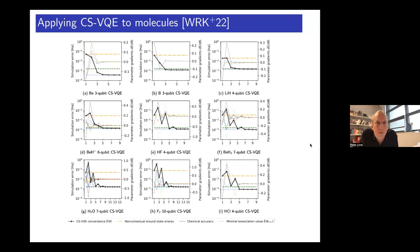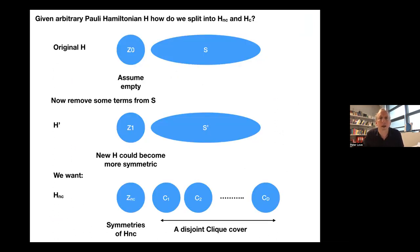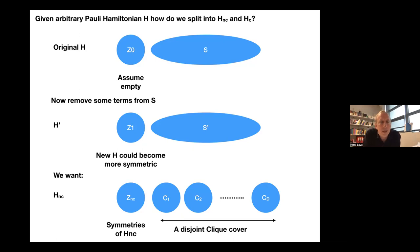The latest paper shows more examples with the same behavior — the solid black line falls below the green line before reaching the full size of the problem. Now, in splitting the Hamiltonian into two pieces and solving the classical part, one has to be cautious that we haven't simply converted a very difficult quantum problem into a very difficult classical problem. So let's say a few words about what we're doing when we break up the Hamiltonian. In the original Hamiltonian, we might have some symmetries Z0 and then some other set of terms S. What we do is remove some terms from S — the size of the symmetry space can go up — and we keep doing this until we have a Hamiltonian with the requisite non-contextual structure: a set of symmetries of the approximate Hamiltonian and what we call a disjoint clique cover for the rest of them.